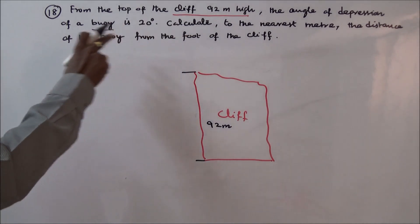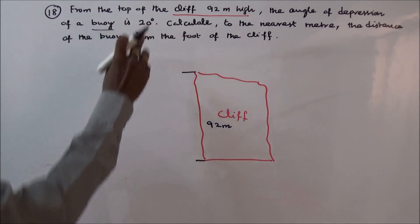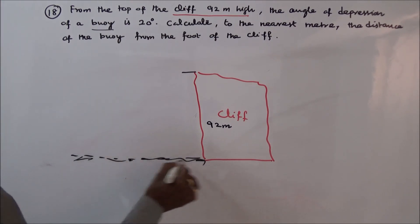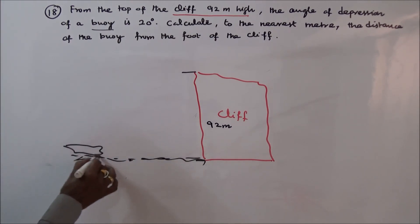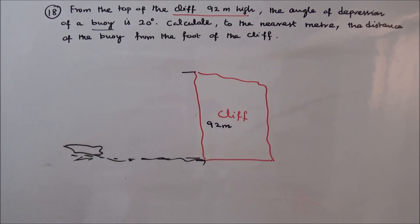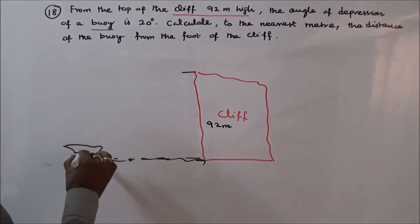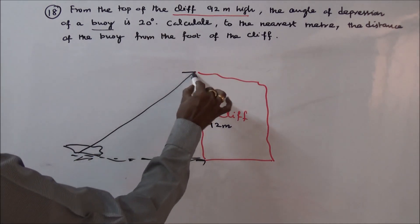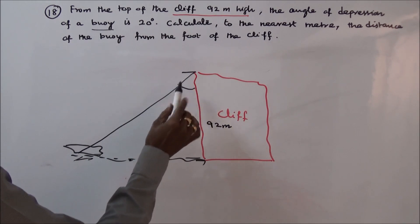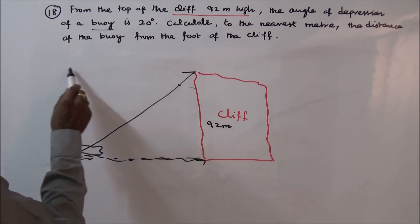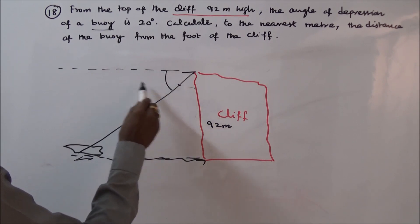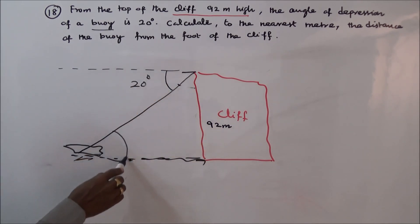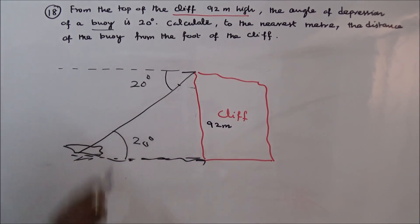The angle of depression of a boy is 20 degrees. The angle of depression is 20 degrees. This is 20 degrees, which means this is also 20 degrees — this is also 20 degrees.